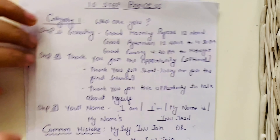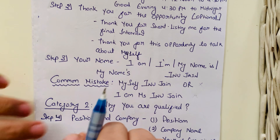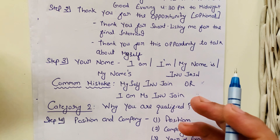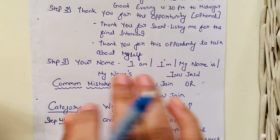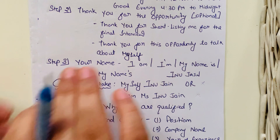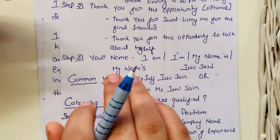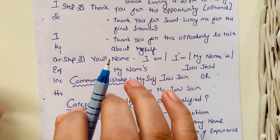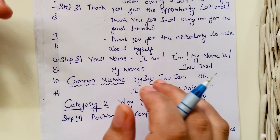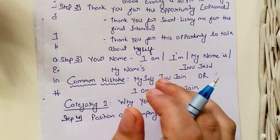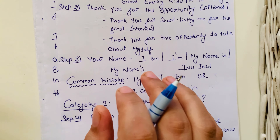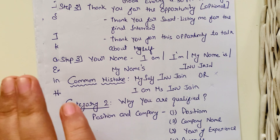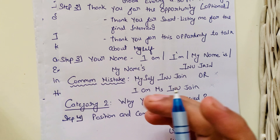Step number three is your name. You can say 'I'm Eno Jain' or 'My name is...' The rule is to smile, be proud of your name, and enunciate it clearly. Common mistakes include saying 'myself Ino Jain' or calling yourself Mr. or Miss. Always use your full name, because simply using your first name may sound a little casual.